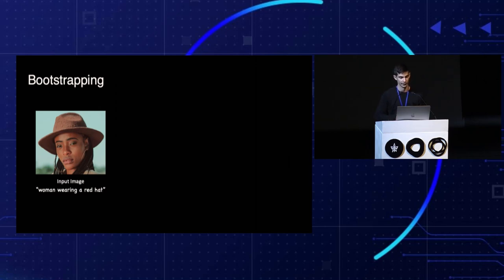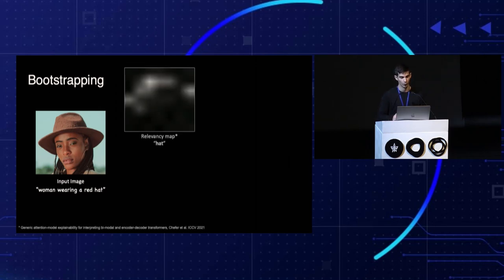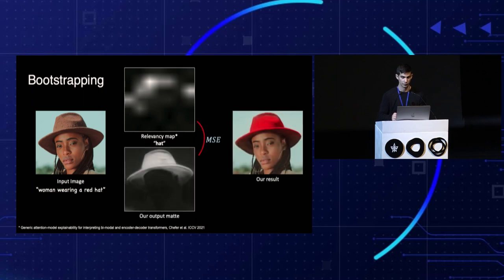To achieve better localization, we use a transformer explainability method to automatically extract a rough relevancy map for a given text — in this example, 'hat.' We then use it to bootstrap our predicted alpha. Notice that our model dramatically refines the initial heat map during training.